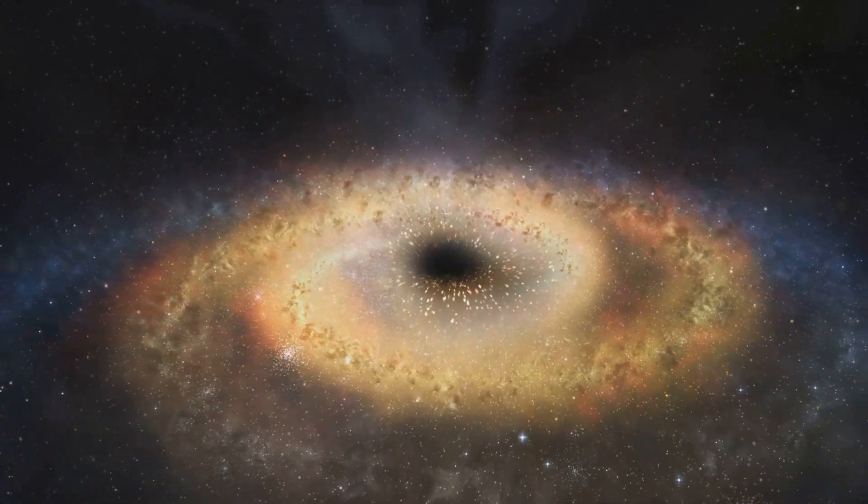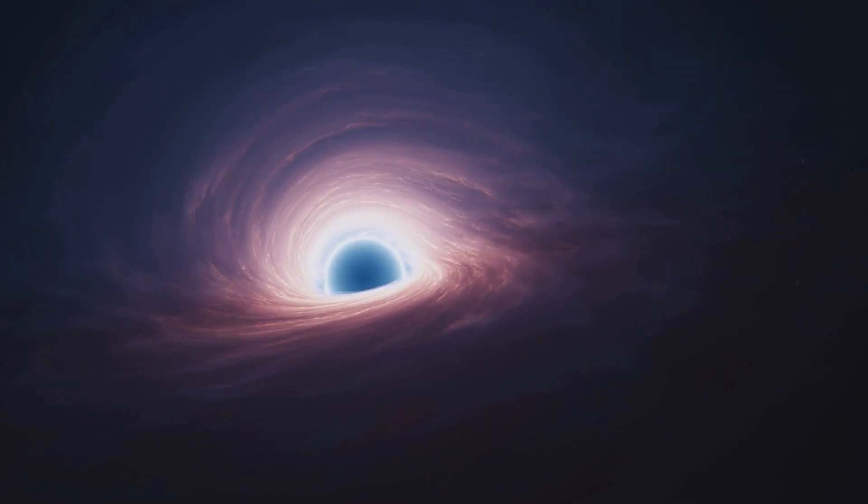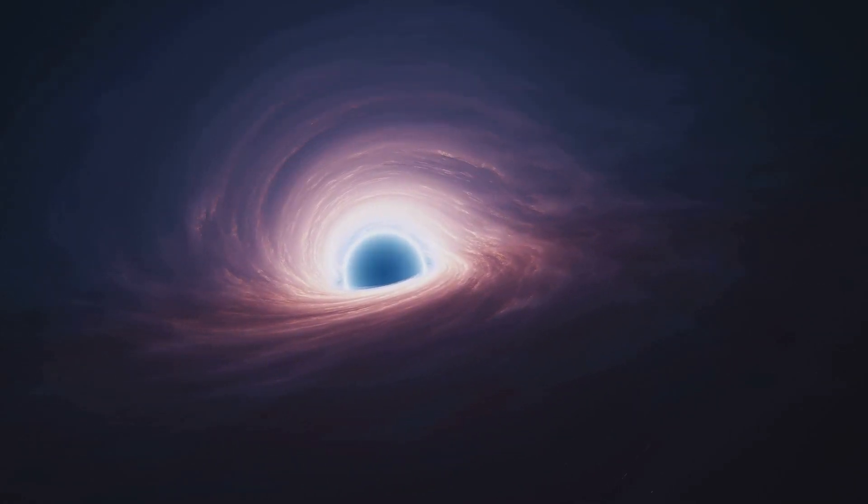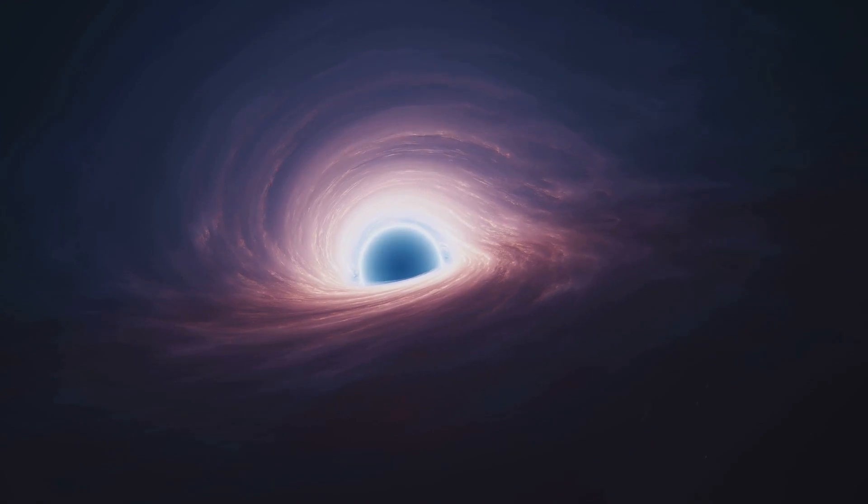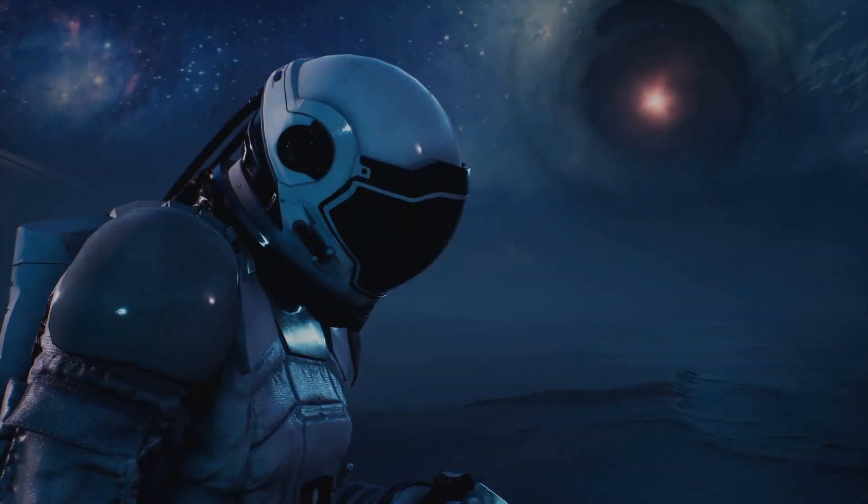But while Sagittarius A is impressive, it's actually relatively small compared to other supermassive black holes. For example, the black hole at the center of the galaxy Holmberg 15a is an astonishing 40 billion times the mass of the sun.